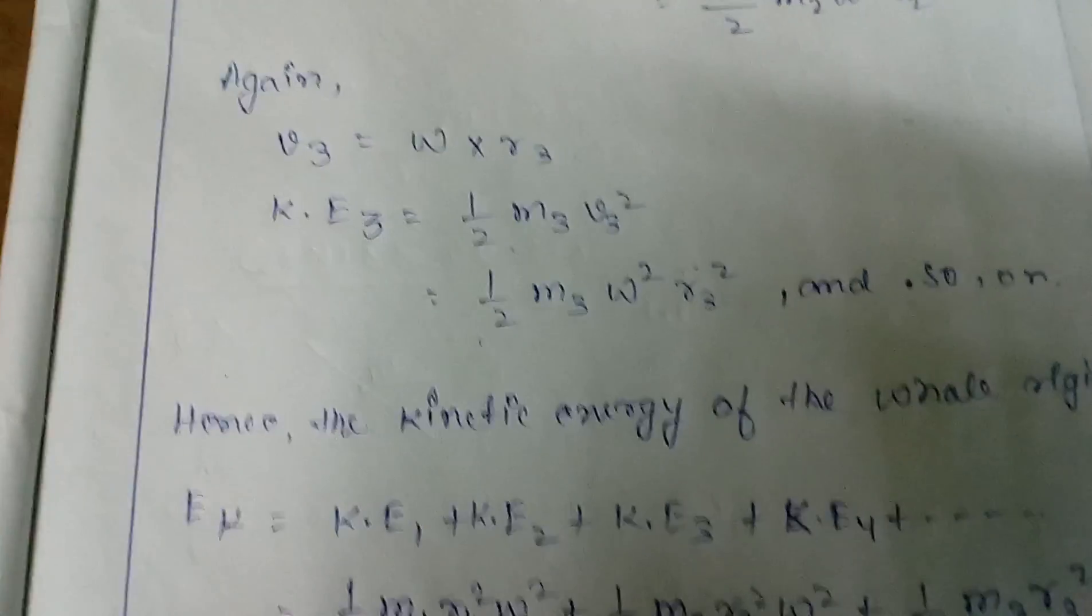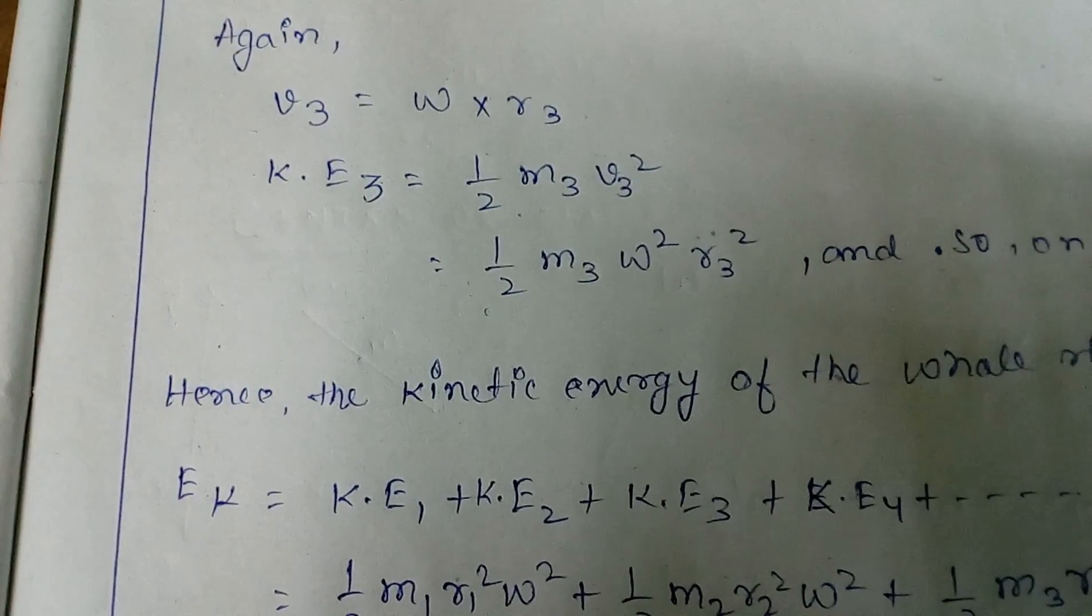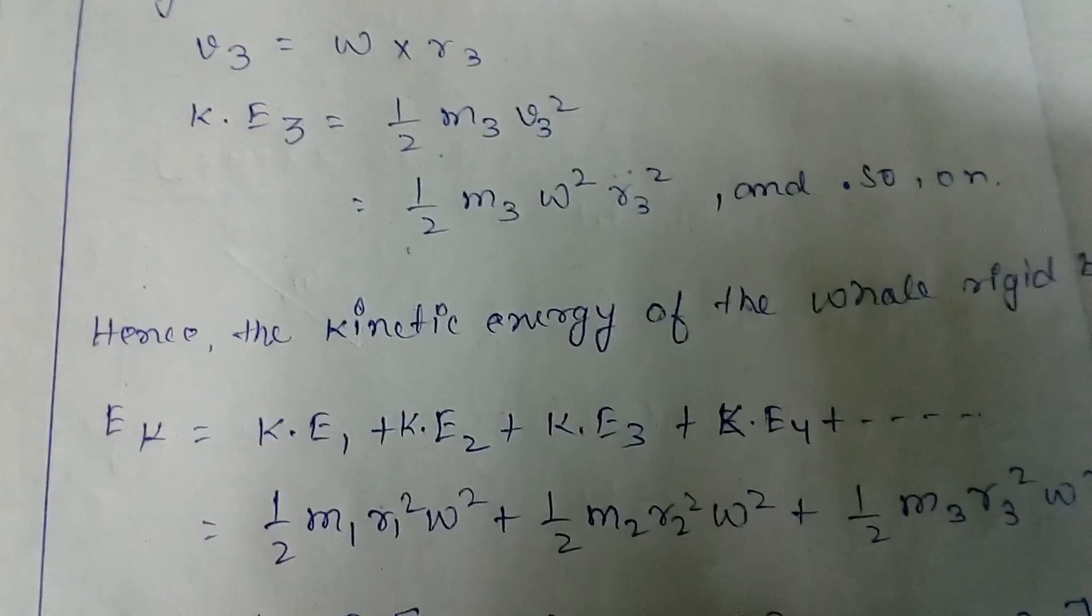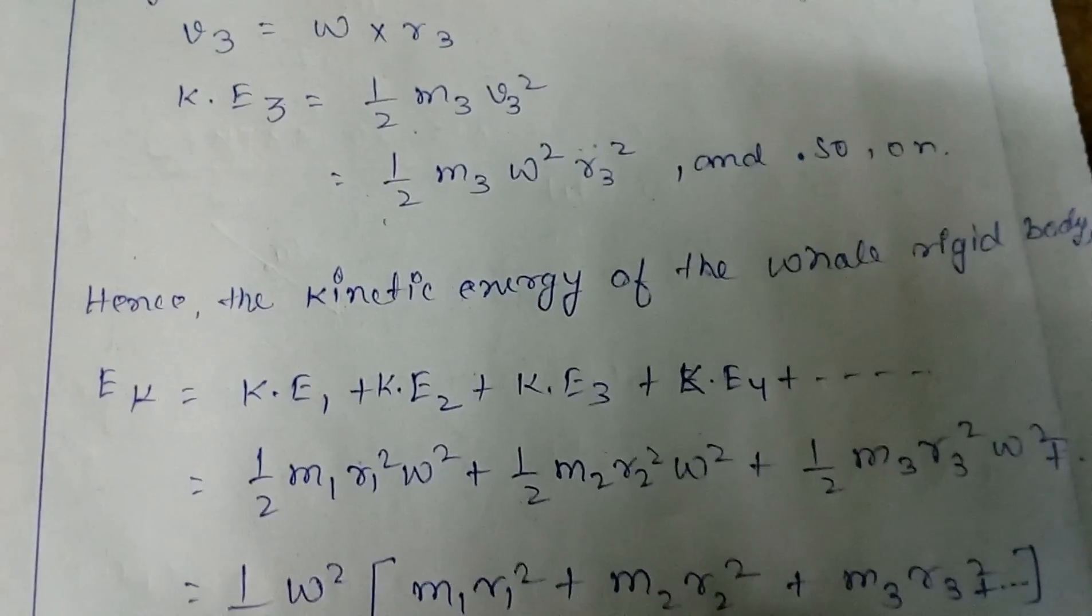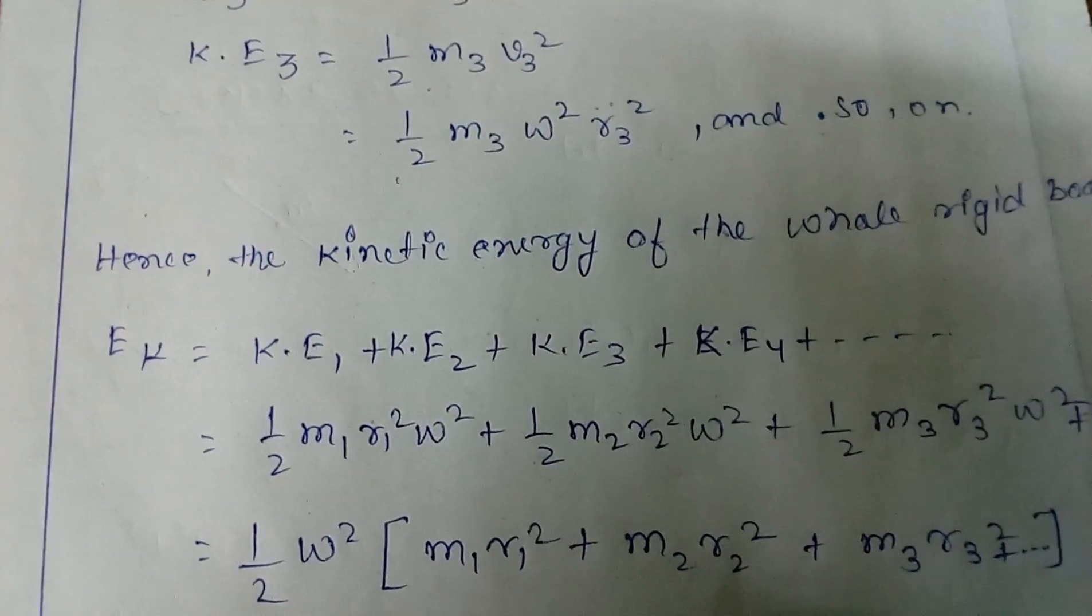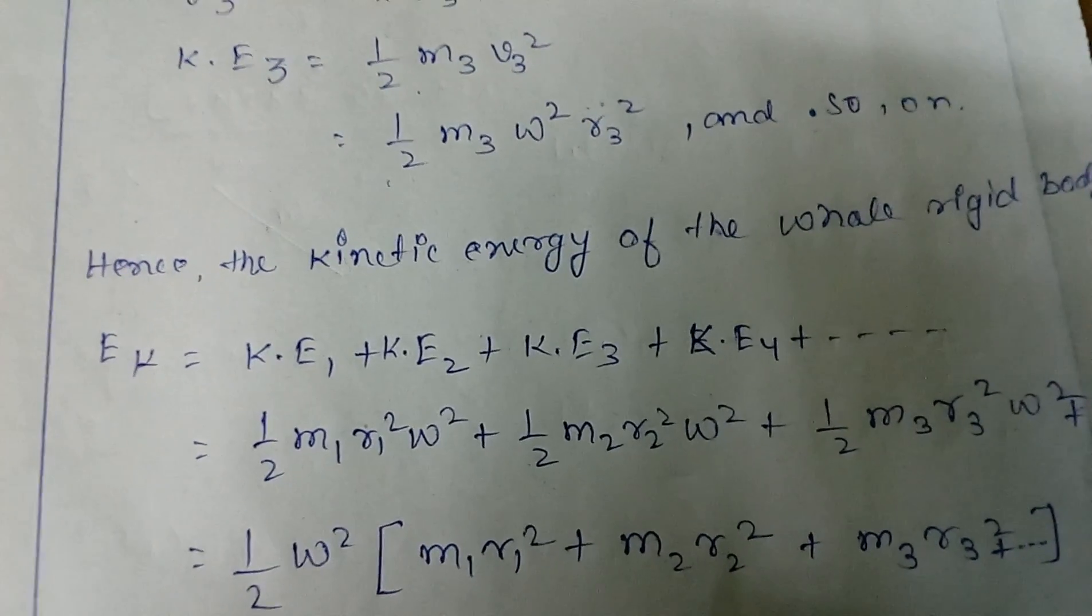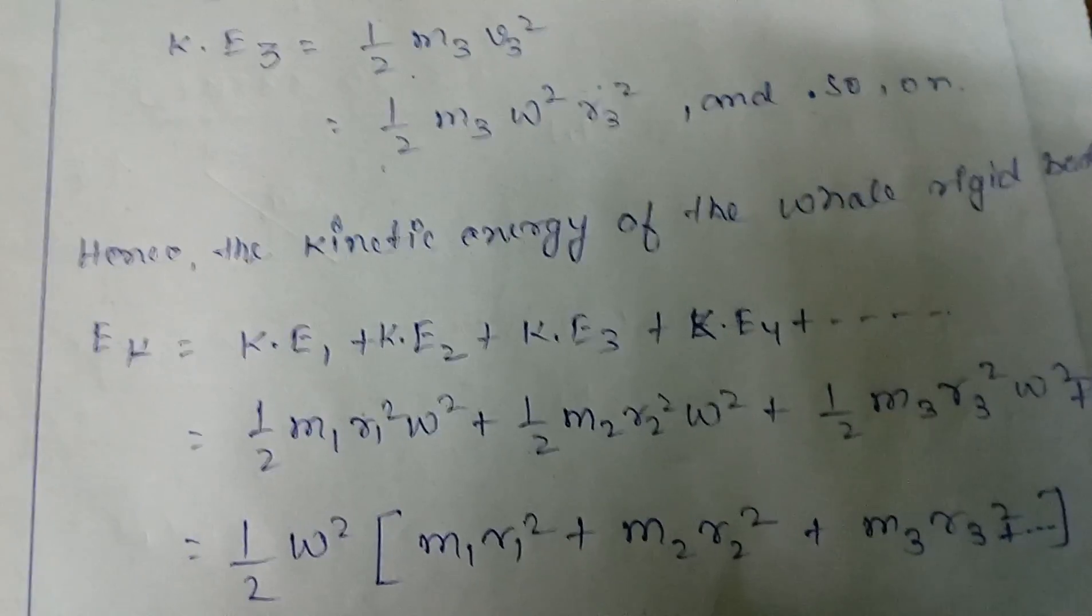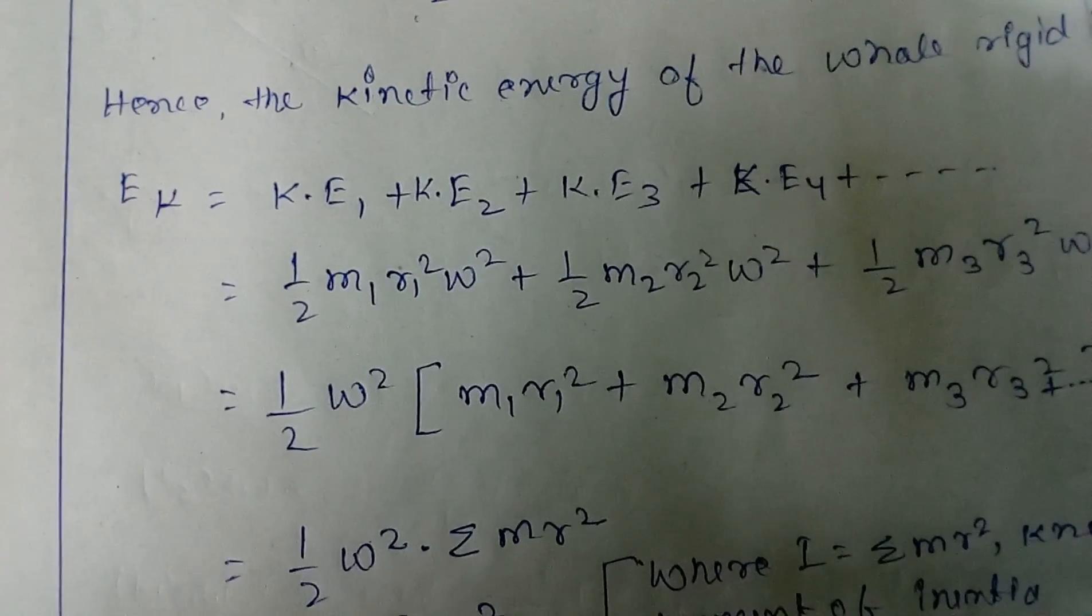So let's just calculate the kinetic energy of the whole rigid body. It will be nothing but the algebraic sum of all the kinetic energy: KE1, KE2, and KE3 of all the respective point masses. So here, putting all the values we get this, and taking half omega square common, so we get half omega square in bracket m1 r1 square plus m2 r2 square plus m3 r3 square plus dot dot.